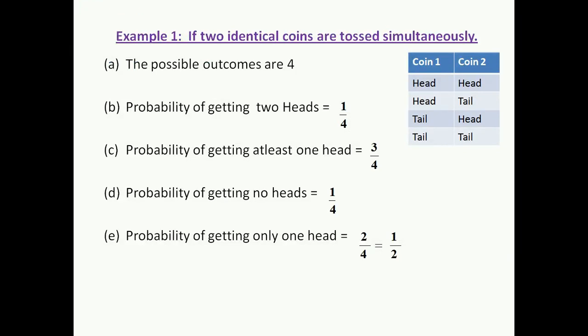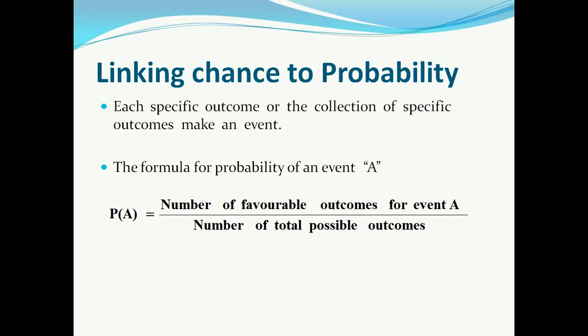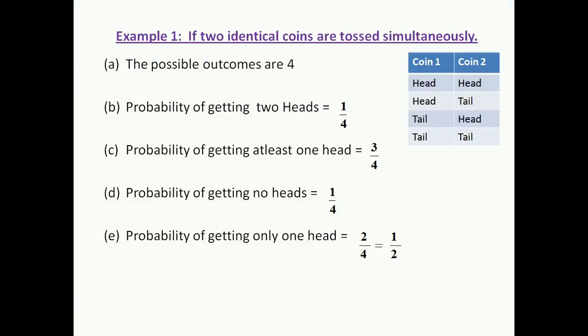For part C, probability of getting at least one head — 'at least' means one or more. The first case (both heads), second case (head then tail), and third case (tail then head) are all favourable. So the numerator is 3 and the total possible outcomes are 4. Therefore, the probability of getting at least one head is 3/4.